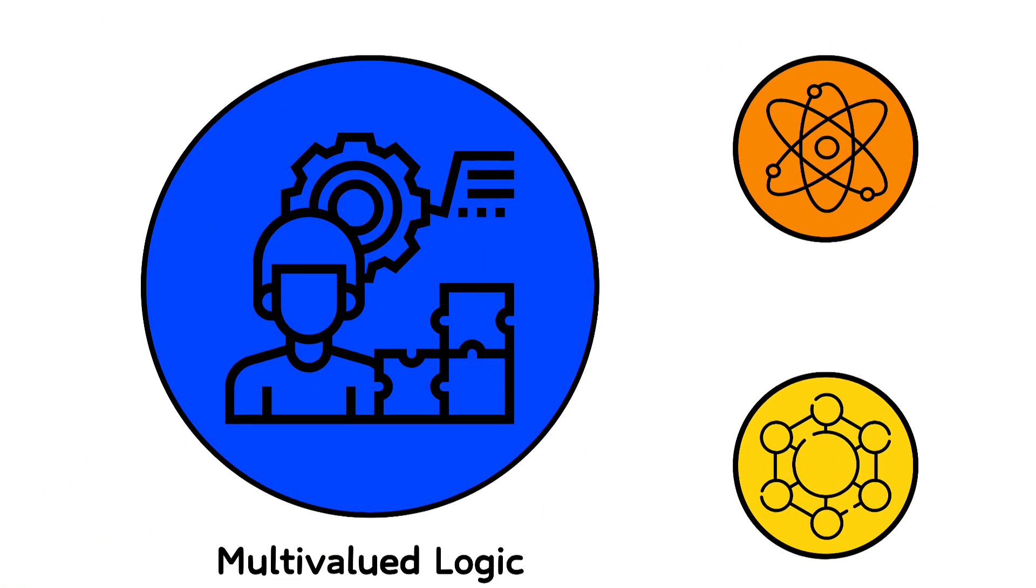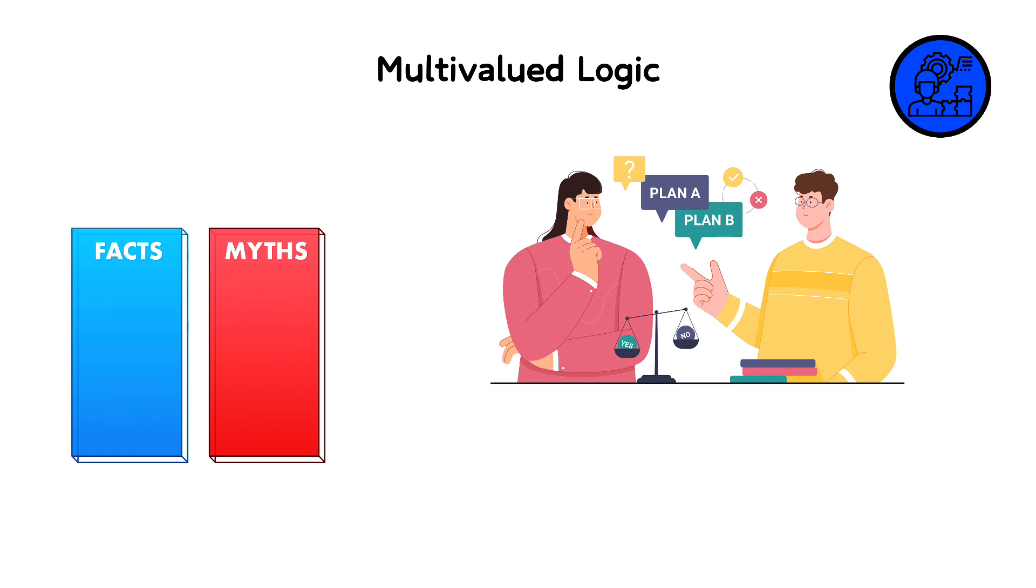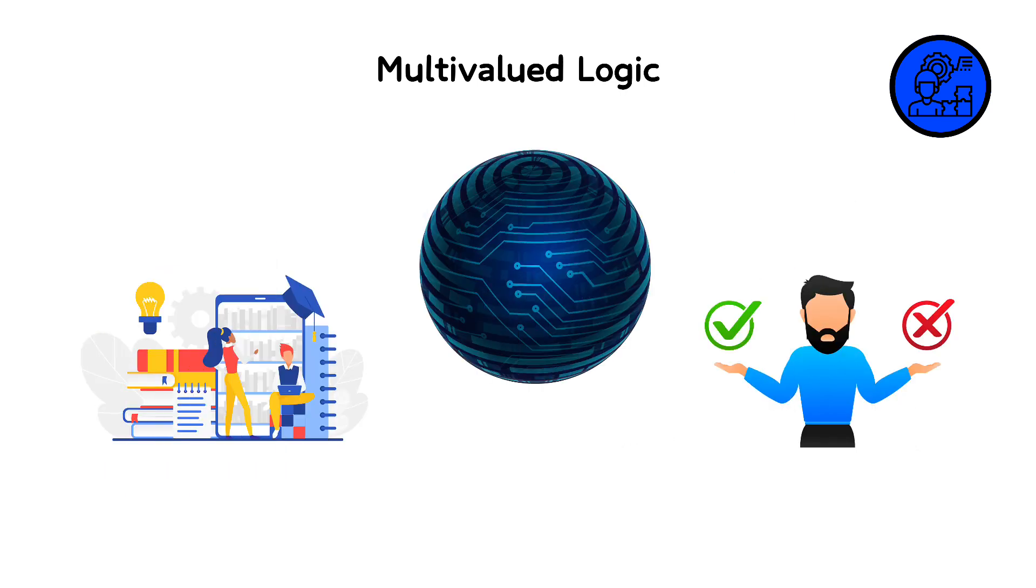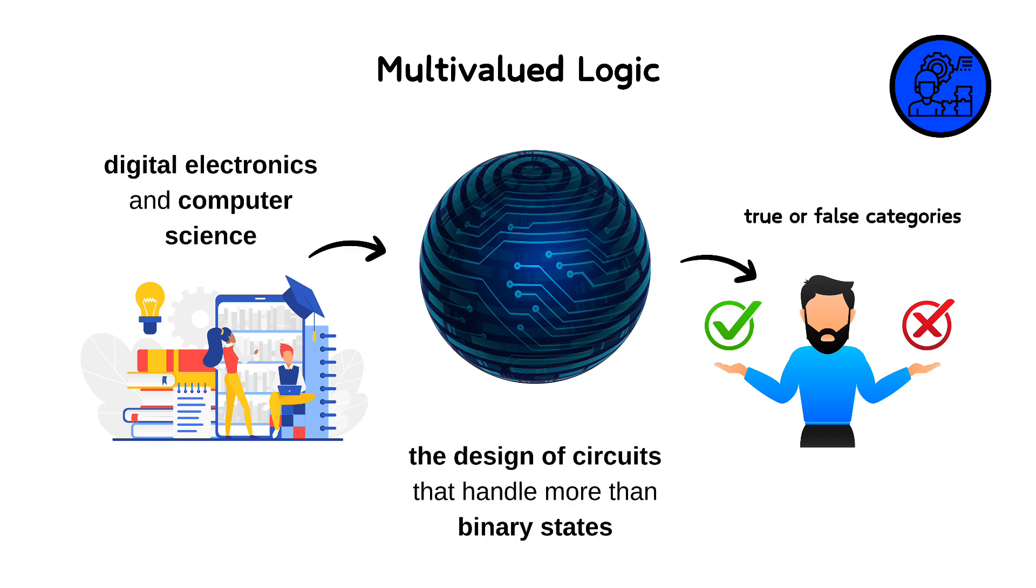Multivalued logic includes systems where more than the traditional two truth values, true and false, are possible. This approach is useful when dealing with uncertainties and scenarios where binary yes-no answers are insufficient. For instance, in addition to true and false, a multivalued logic might include values like unknown or irrelevant. This type of logic finds applications in digital electronics and computer science, particularly in the design of circuits that handle more than binary states, and in databases where data entries might not fit neatly into true or false categories.